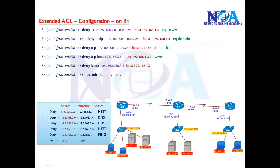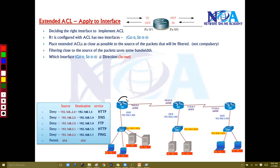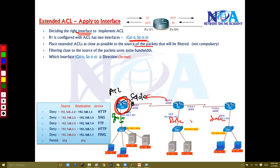We configured these ACL rules in the previous topic, and now we will apply them. The ACL rules are configured on Router 1, which has two interfaces: S0/0/0 and G0/0. We can apply the ACL on either interface. Deciding the right interface is important. Generally, implementation should be nearest to the source.